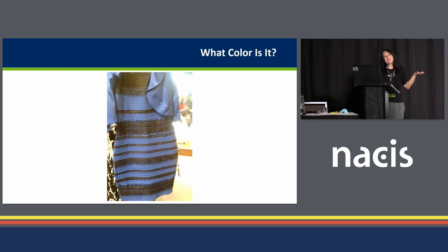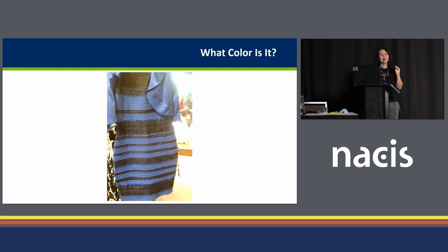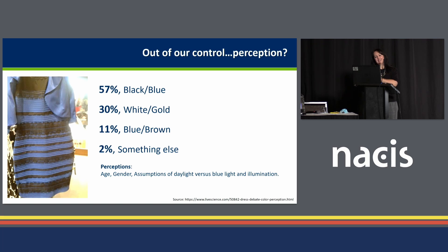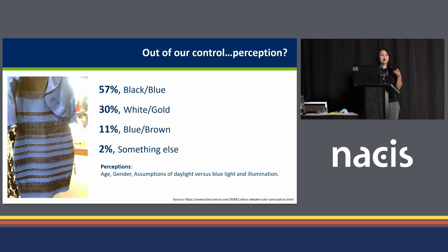Not everything is within our control. Perception is inherently unique to each individual person, and there was a study done by MIT that shows this. What colors do you see? According to the MIT study, 1,400 people saw this dress with varying percentages of colors. They found several factors affect perception, like age, gender, assumptions of daylight and blue light, and illumination.